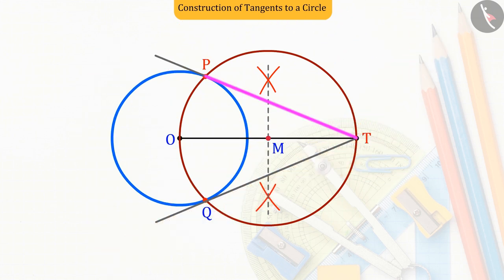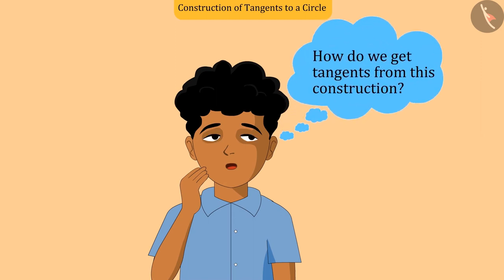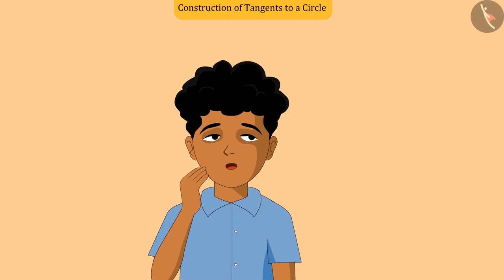Now we will find out, using the properties of tangents, whether the two lines PT and QT are tangents to the circle. Let's see how.